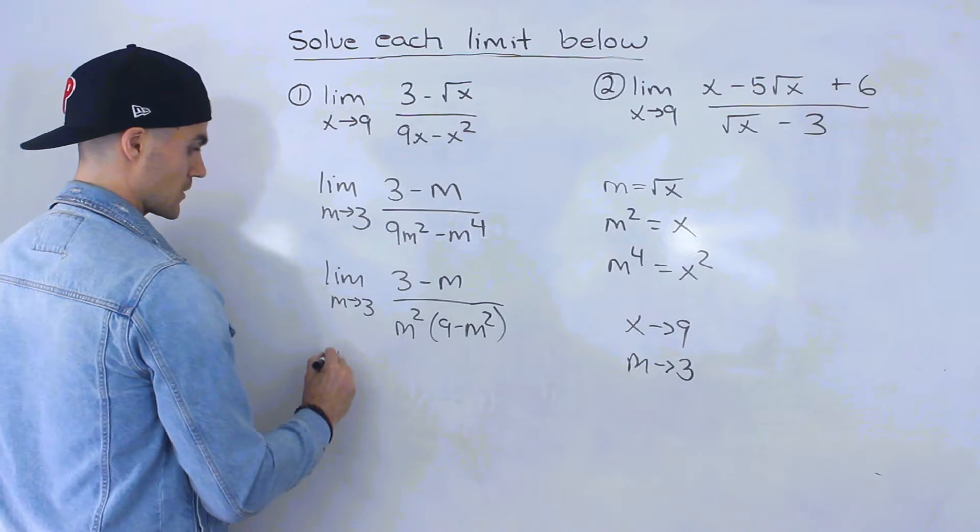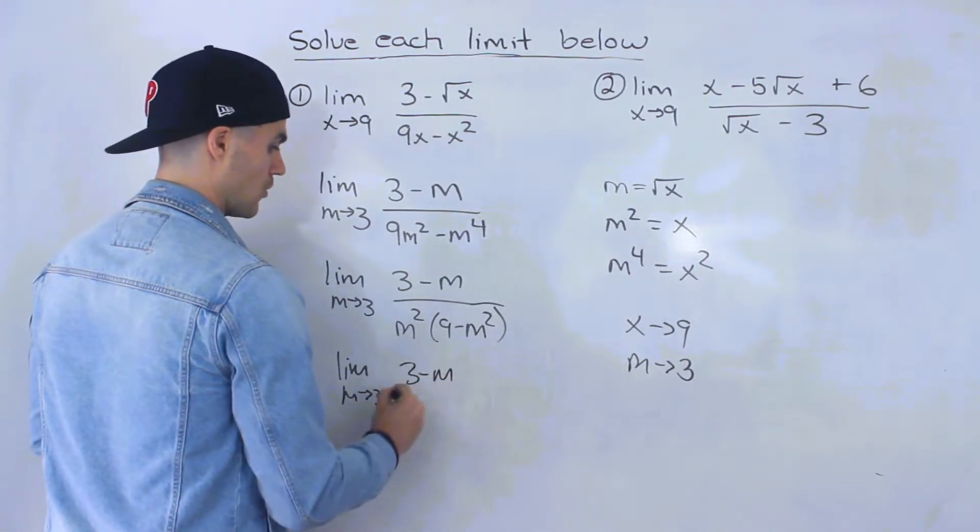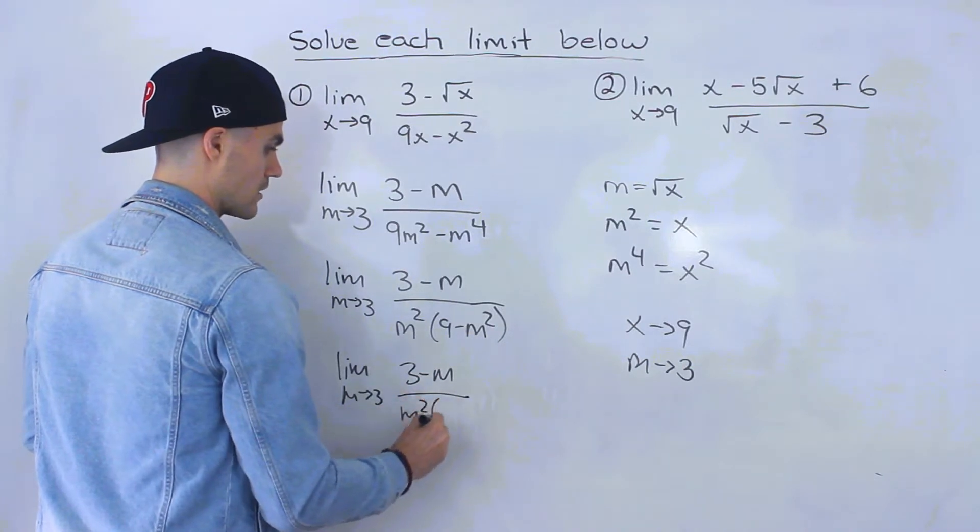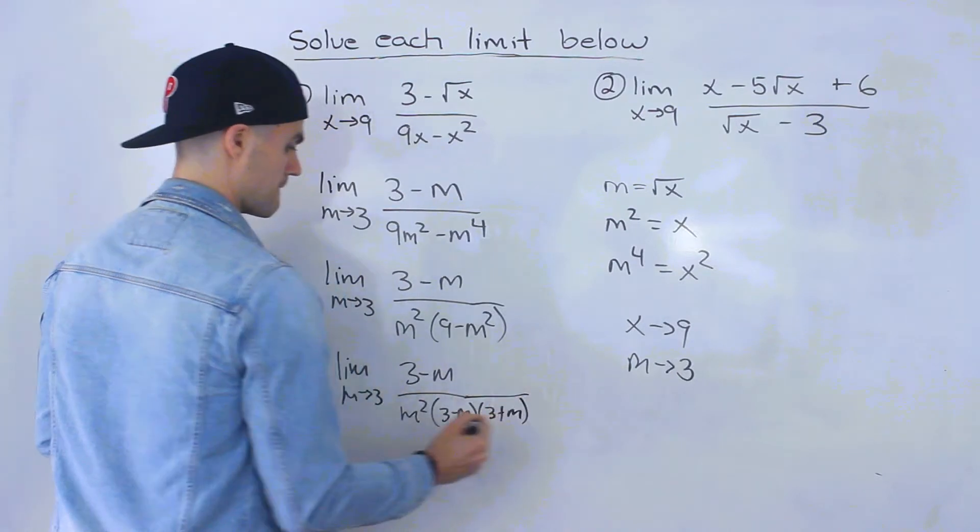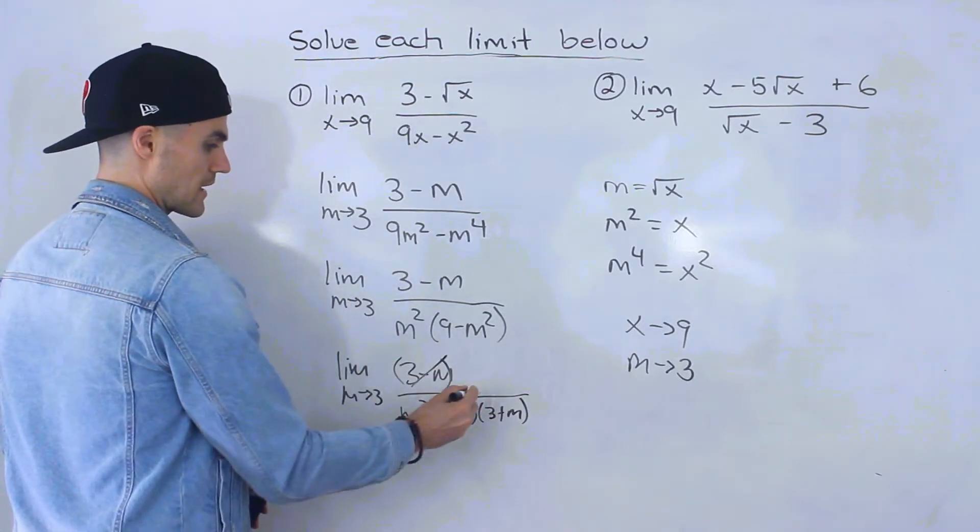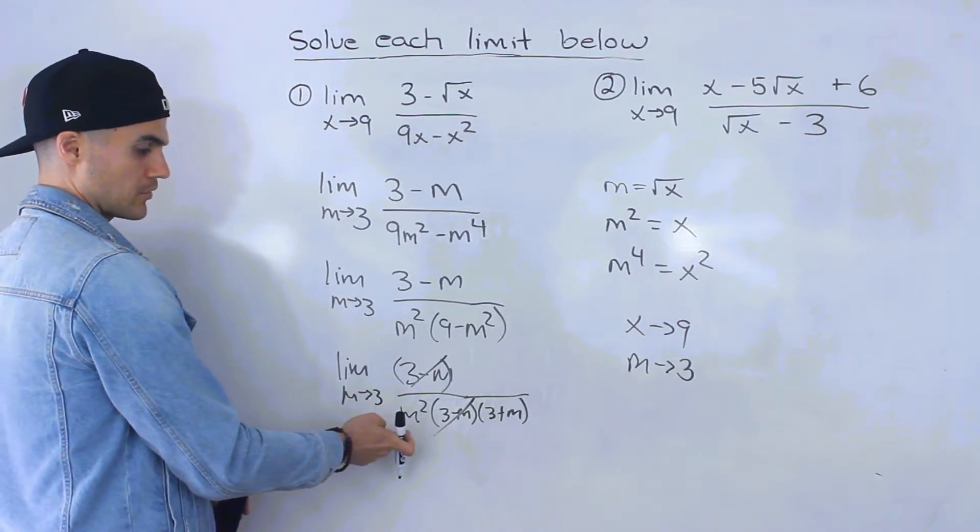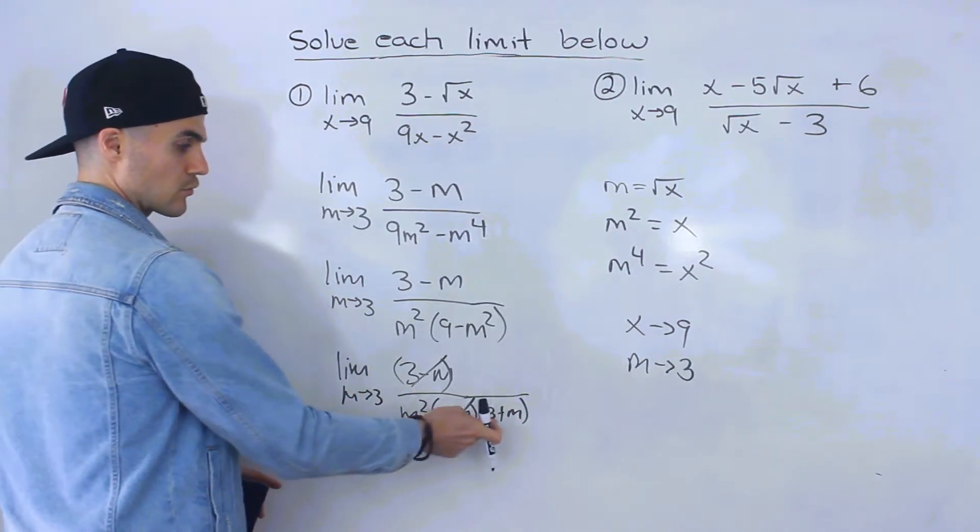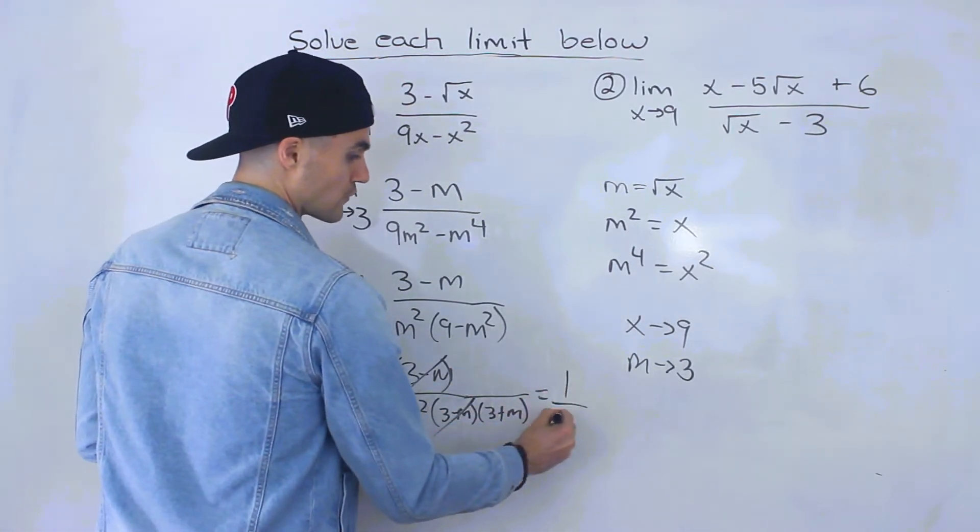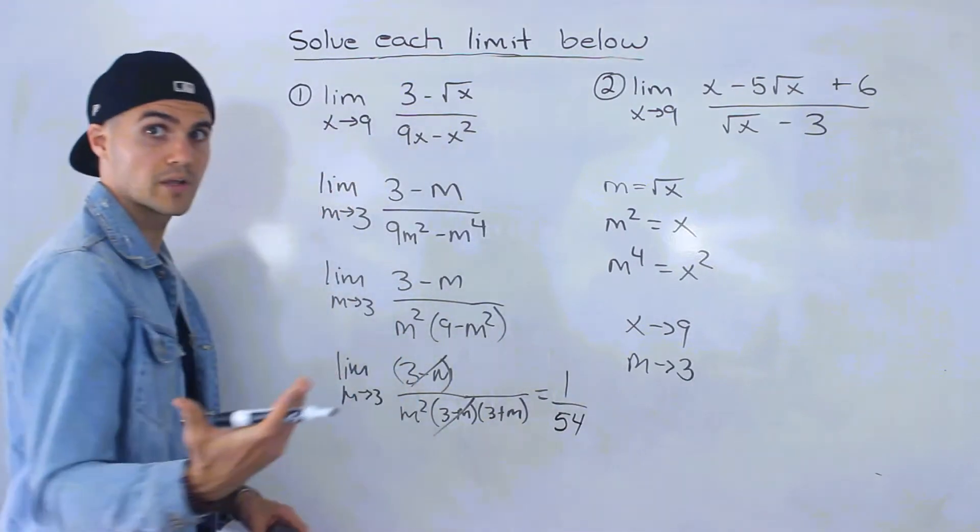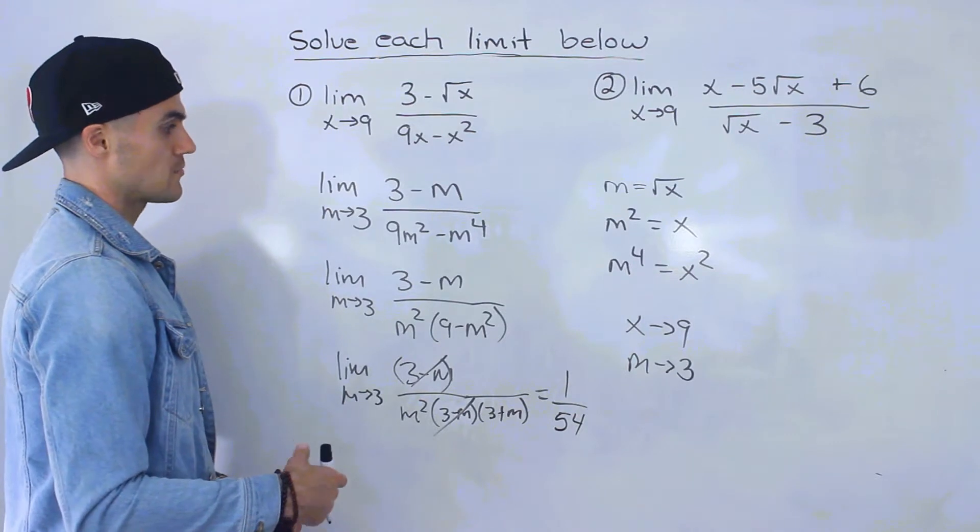First, take out m squared. We're left with 9 minus m squared, which is a difference of squares. So we have the limit as m approaches 3 of 3 minus m over m squared times (3 minus m)(3 plus m). These 3 minus m terms cancel. Now plug in 3 for m. 3 squared is 9, 3 plus 3 is 6, 9 times 6 is 54. We get 1 over 54, the same as rationalization.